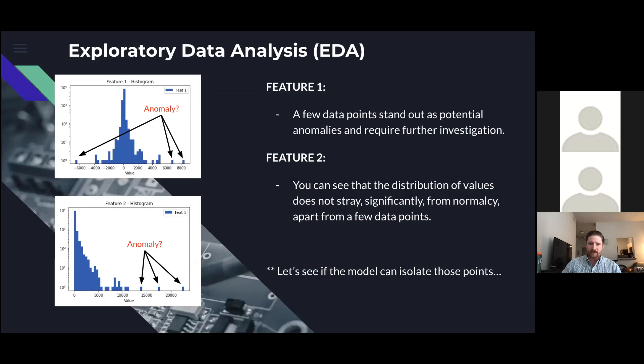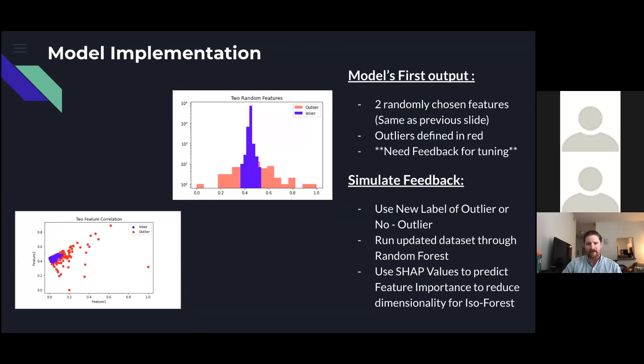We are going to set our contamination to 1%, which will tell our model to look for all data points that do not fall in the 99th percentile of commonality. The isolation forest chose two random features and determined the 1% of the data points that fall outside of the range of common data points.